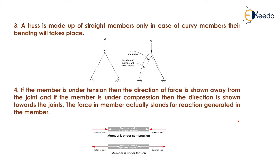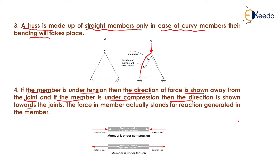The next assumption is that a truss is made up of straight members only — no curved members — because if a member is curved, the force acting at the joint would cause bending of that member, and bending of members is not allowed in trusses. The next assumption concerns sign convention: if a member is under tension, the direction of force is shown away from the joint, and if a member is under compression, the direction of force is shown towards the joint.